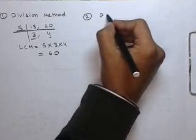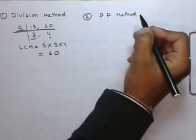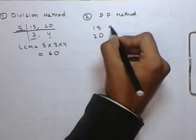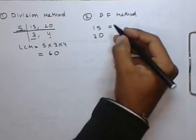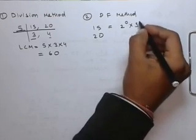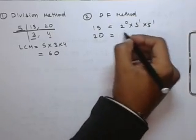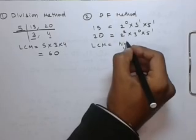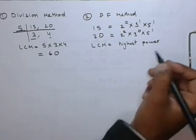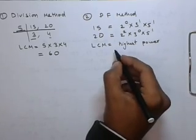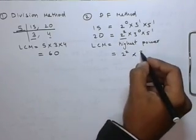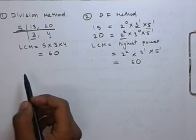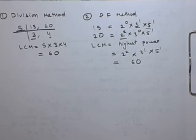In the prime factorization method, we write 15 and 20 in powers of prime numbers. 15 is 2 to the power 0, 3 to the power 1, 5 to the power 1. Similarly, 20 is 2 to the power 2, 3 to the power 0, 5 to the power 1. LCM is the highest power of all prime numbers, so LCM equals 2 to the power 2, 3 to the power 1, 5 to the power 1, giving LCM = 60. We get the LCM of 15 and 20 as the same from both the division method and the prime factorization method.